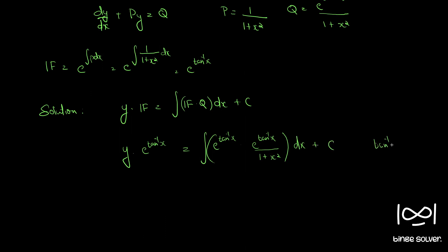Let's put tan⁻¹x = t, so 1/(1 + x²) dx = dt. Using this substitution, the integral becomes ∫ e^t · e^t dt = ∫ e^(2t) dt, plus C.